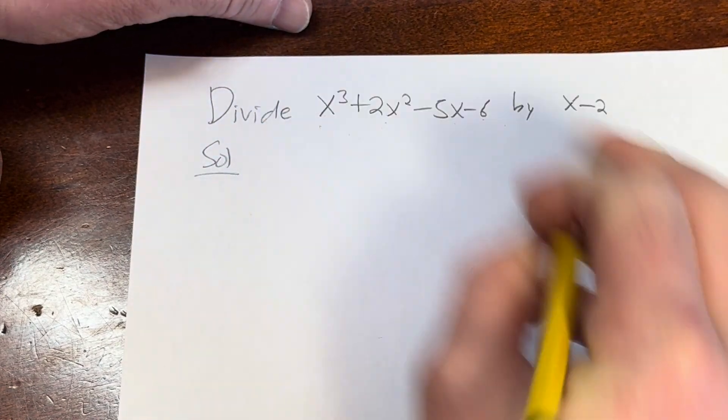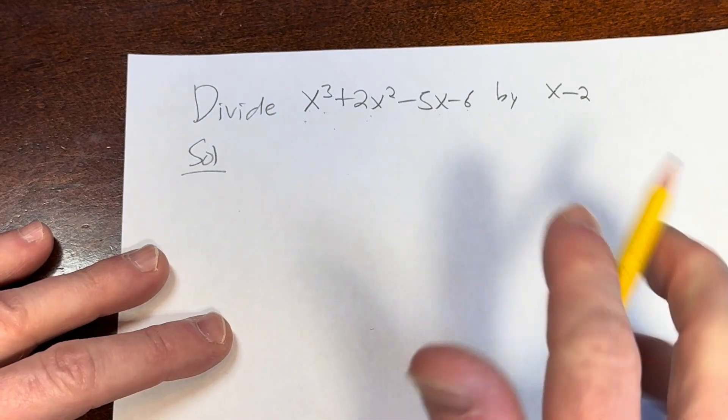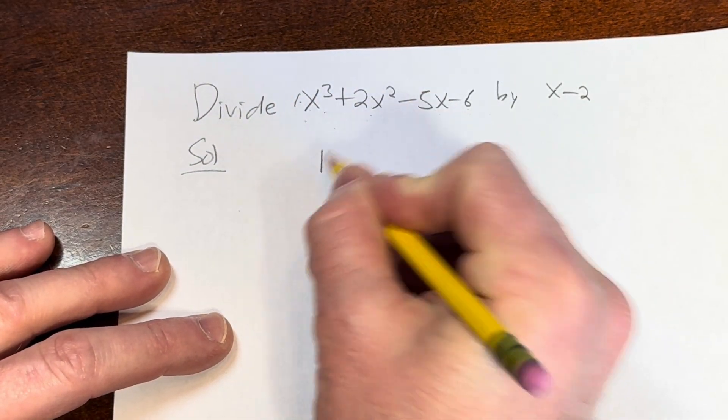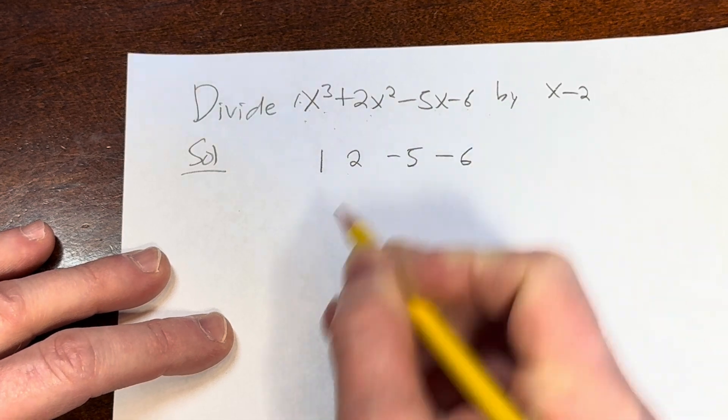Solution. So the first step is to write down the coefficients of this polynomial. So we have 1, 2, negative 5, and negative 6, just like that.